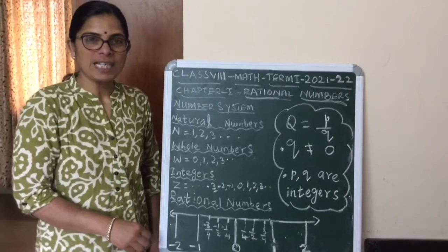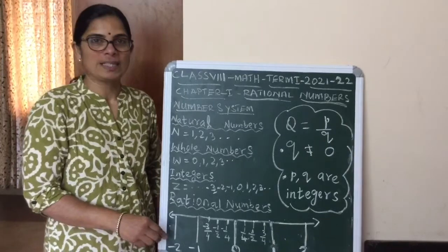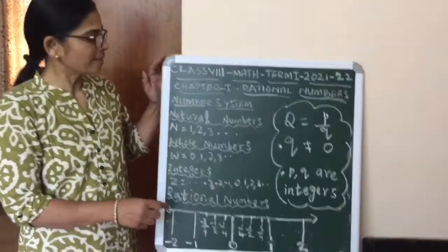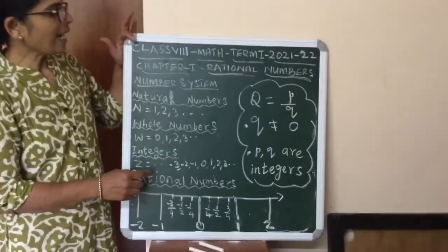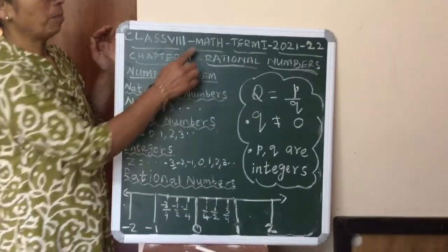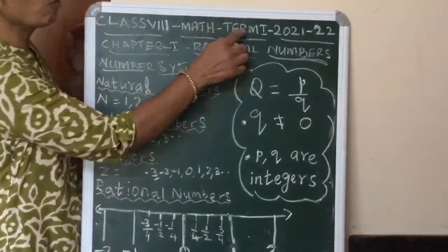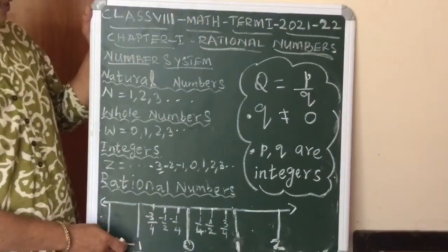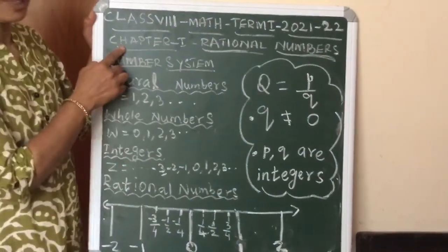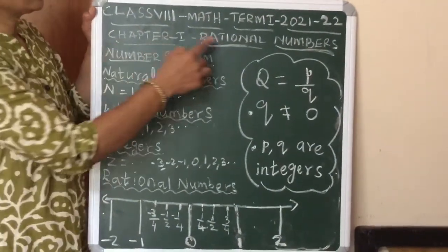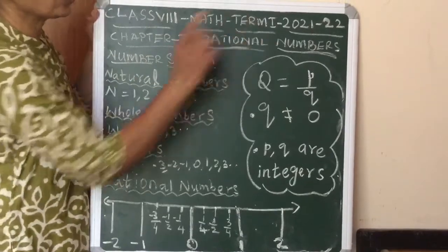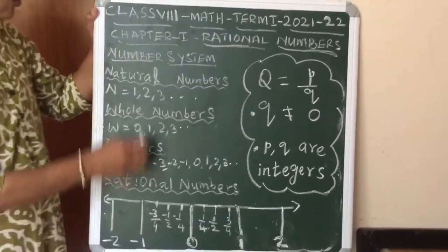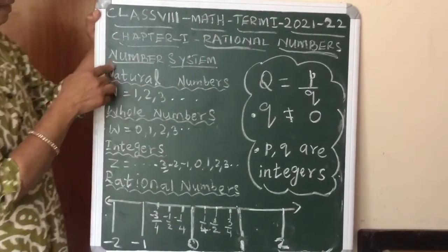Hi everyone, welcome to Easy Math. Today in this video we'll see Class 8 Maths Term 1 for the academic year 2021-22, which is Chapter 1, dealing with rational numbers. Before we go to rational numbers, let us recall the number system from junior classes.